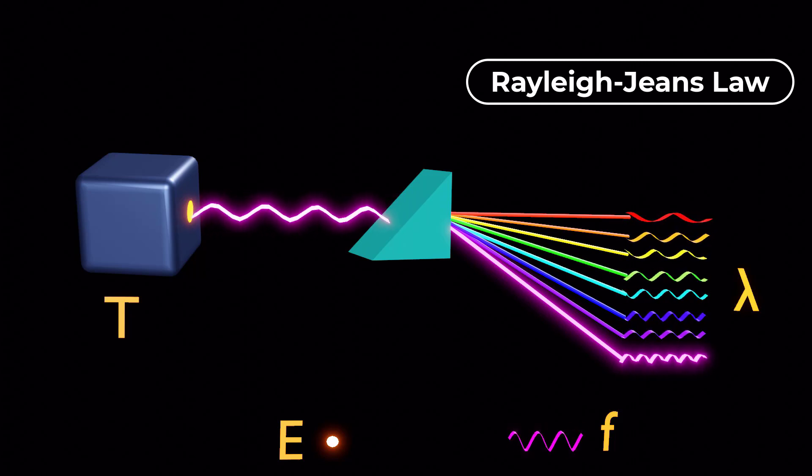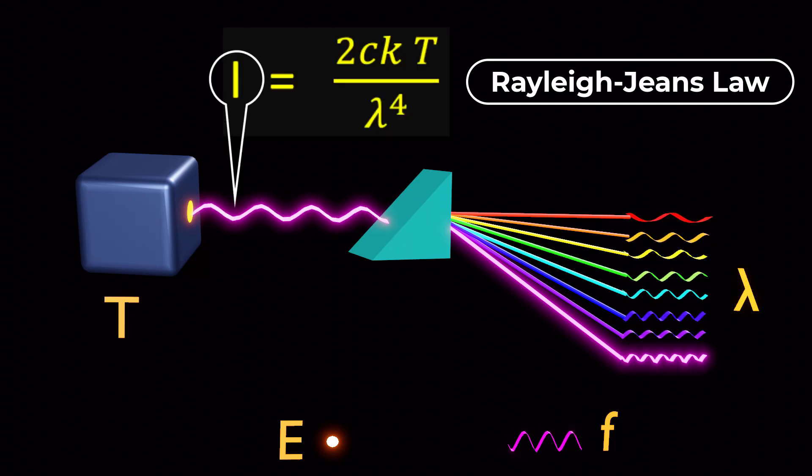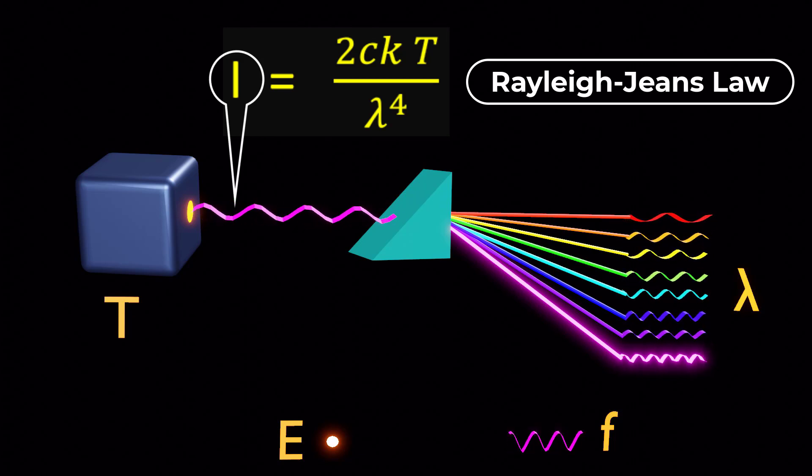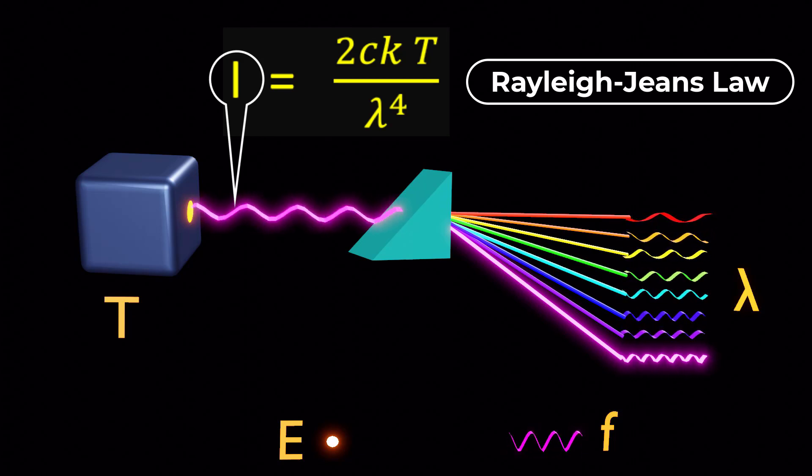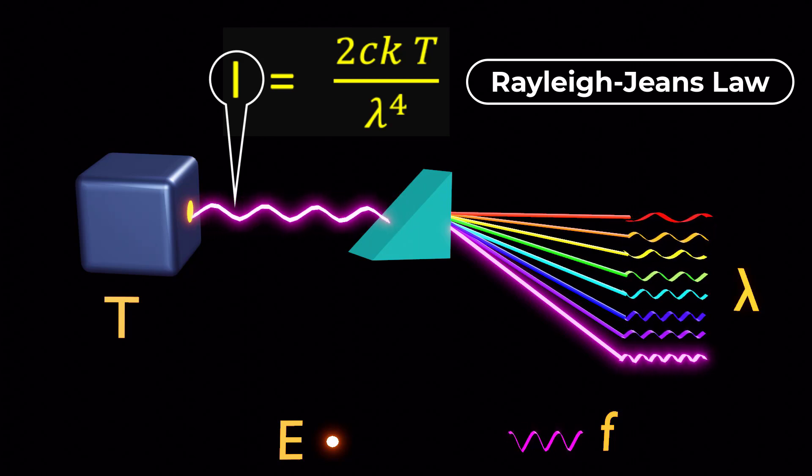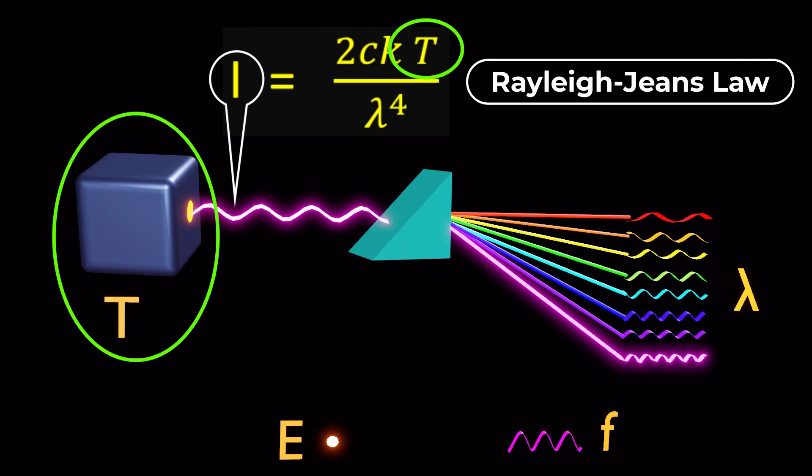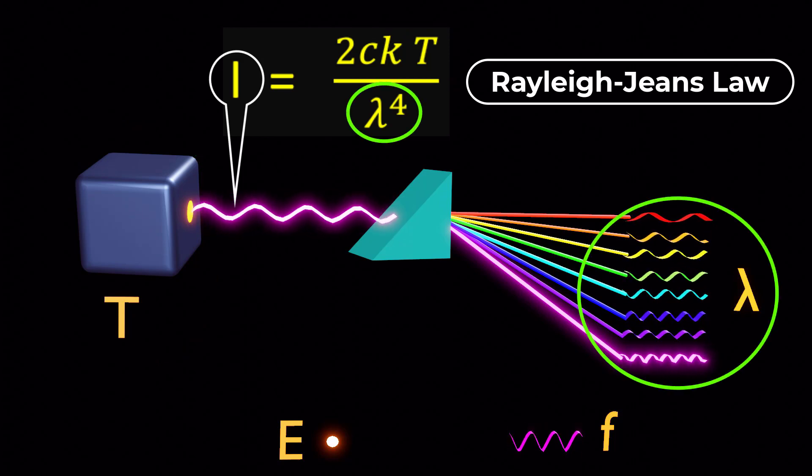The Rayleigh-Jeans law provides insights into the intensity of radiation emitted by a black body. It states that the intensity of radiation from a black body is directly proportional to its temperature and inversely proportional to the fourth power of the wavelength.